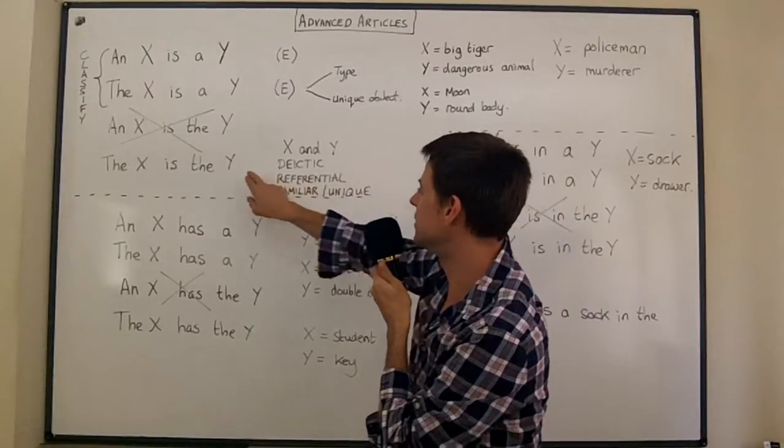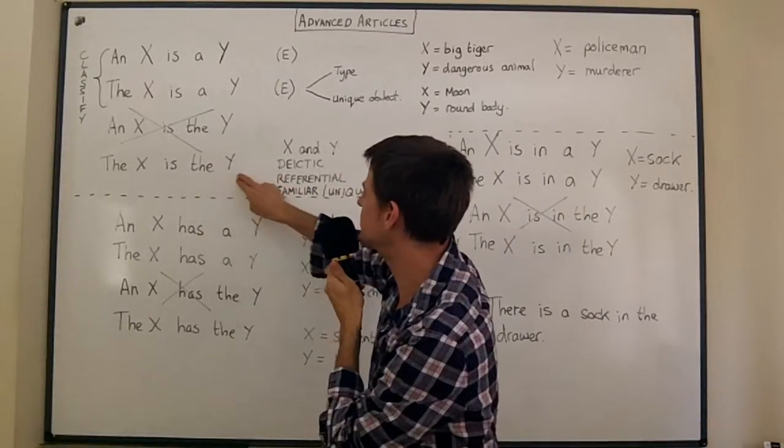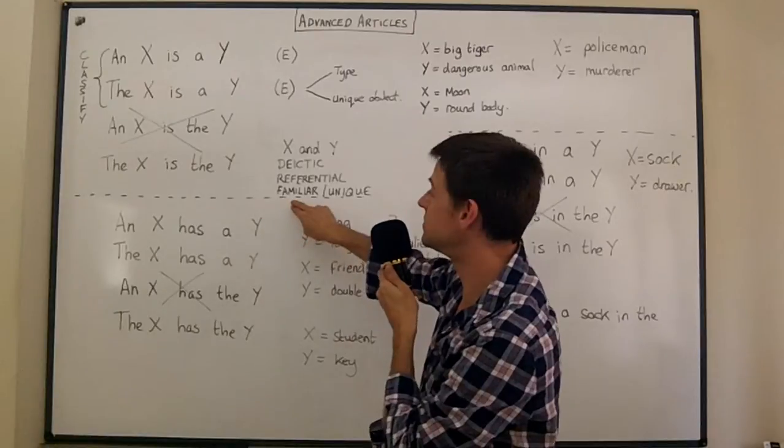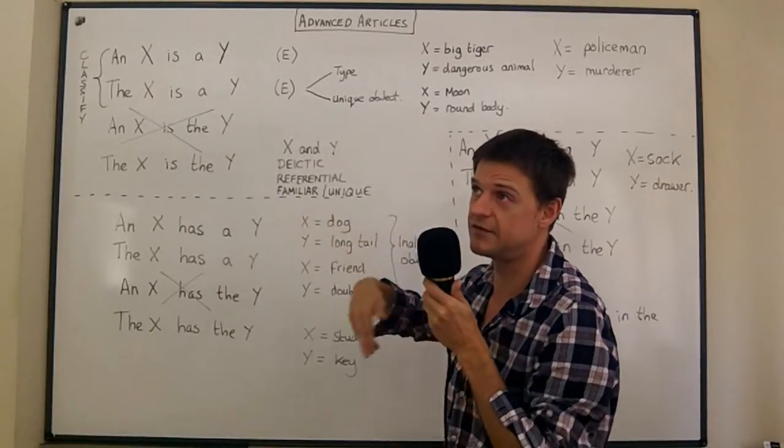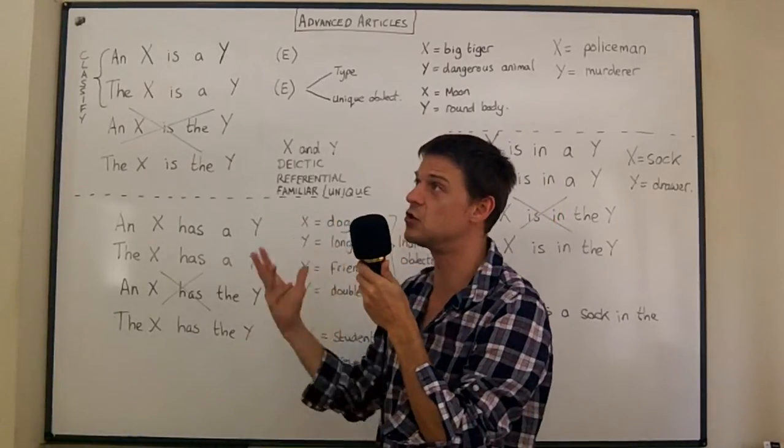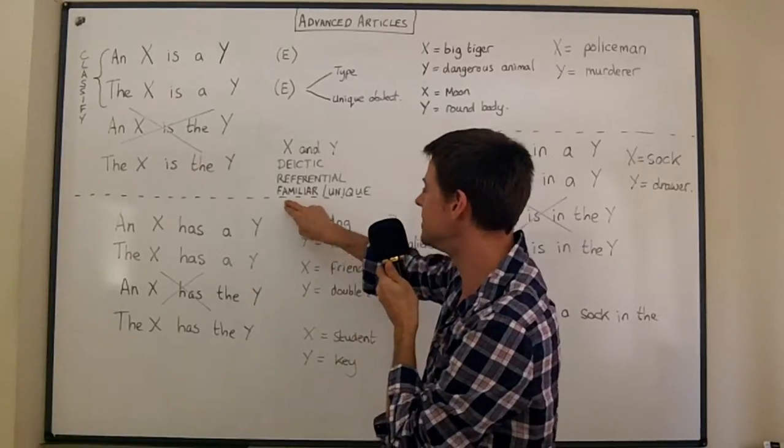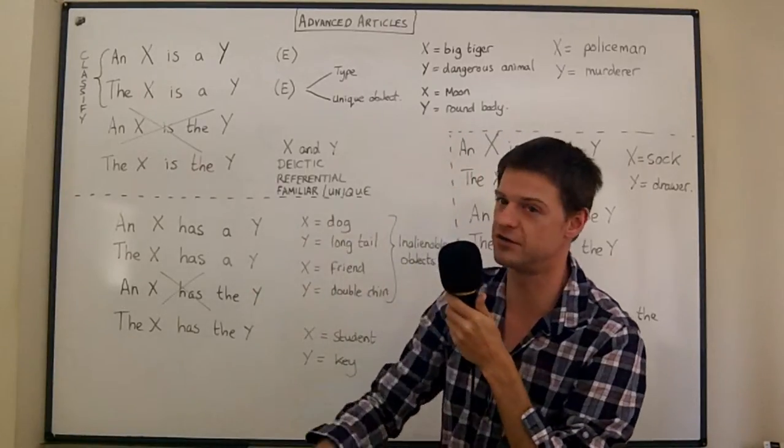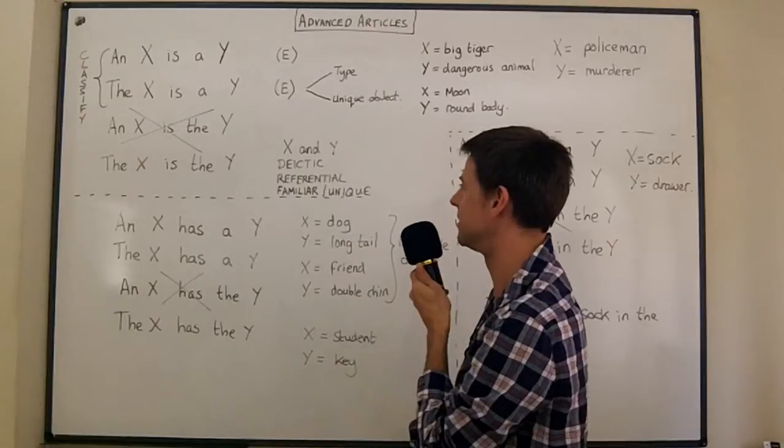And you should notice that it's referential. It refers to an earlier murderer who the reader is already familiar with. Even though this is the moment of discovering who the murderer is, the reader is familiar with this murderer because the whole book is about this murderer.